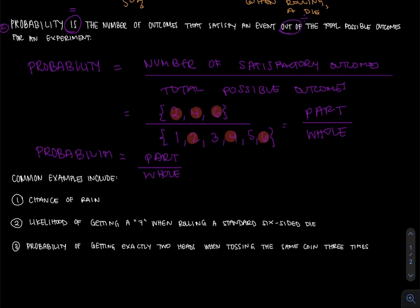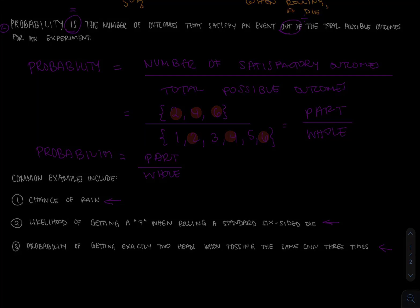Some common examples for probability include chance of rain, likelihood of getting a seven when rolling a standard six-sided die, probability of getting exactly two heads when tossing the same coin three times. We will go into detail of all of these examples in three separate videos. Talk to you soon.